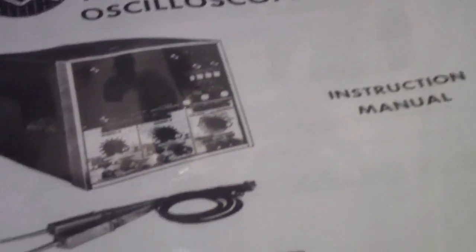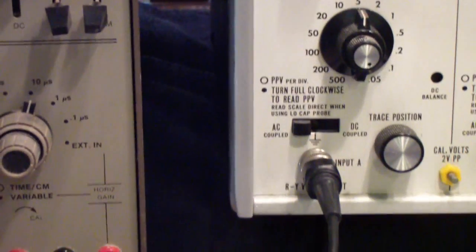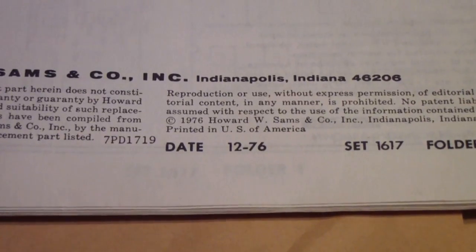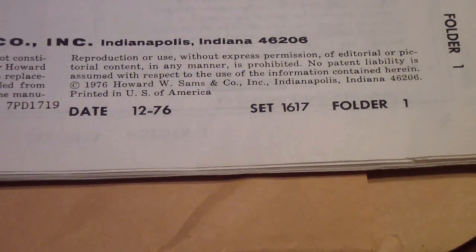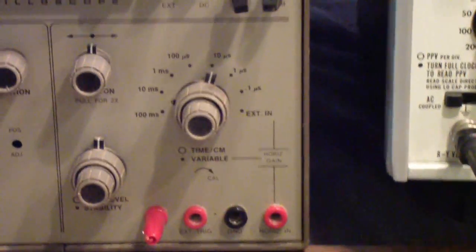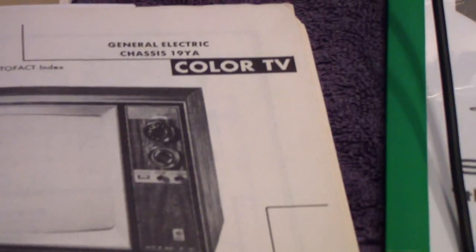By the time that I got this scope, TVs had started to be transistorized. And this is a General Electric chassis. In fact, I owned this TV, the 19YA. As you see from the date down here, this was a 1976, December of 1976 set. I worked on that particular set with this oscilloscope. In fact, I discovered that there was a yoke short in the set. This was several years after I bought it.